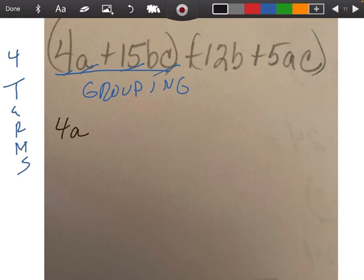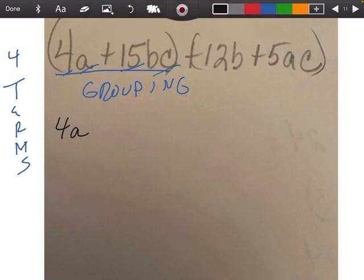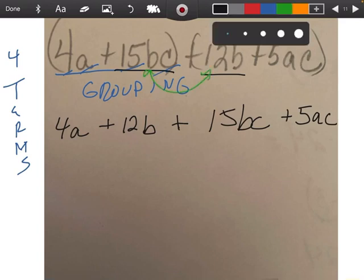So what we're going to do is we're going to rewrite this problem. We're going to write it as 4a, and then we're going to bring this guy in front plus 12b plus, and then we'll write this one next, 15bc plus 5ac. So all I've done really is just switch these two terms out.